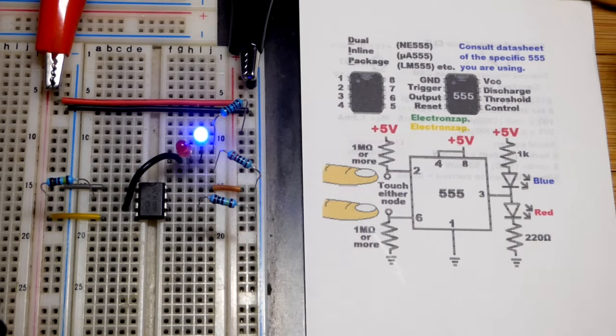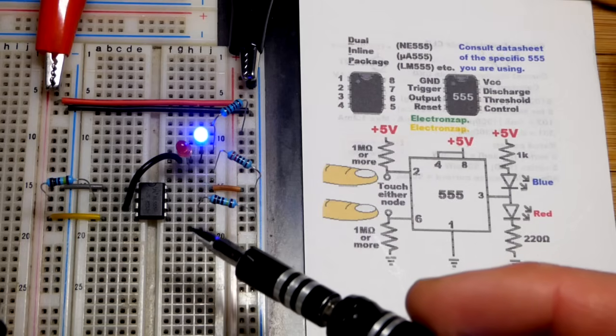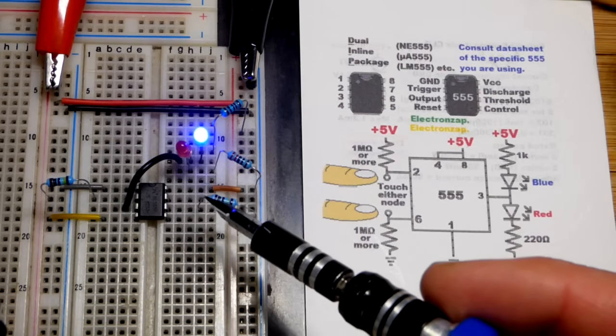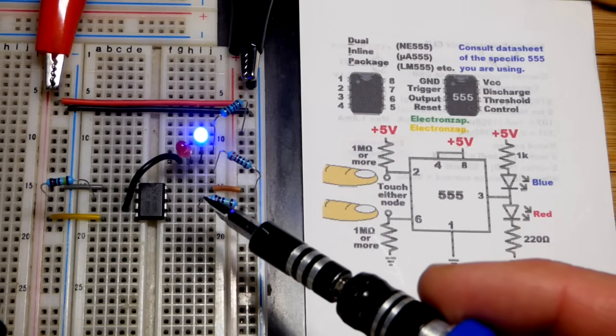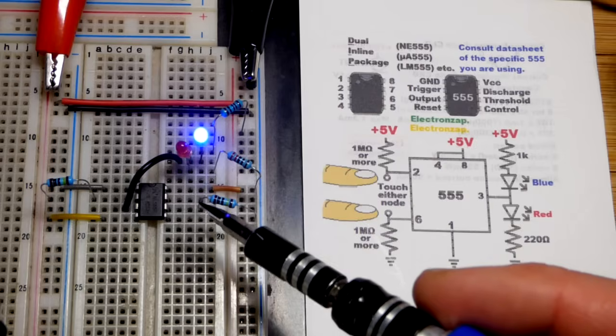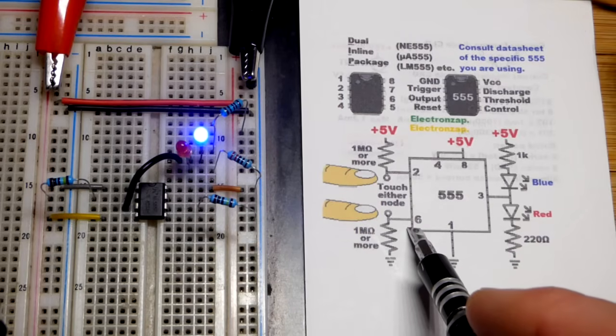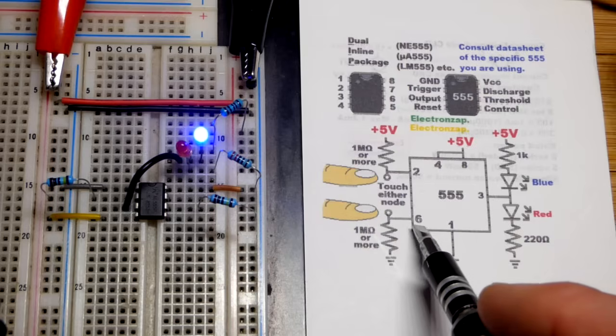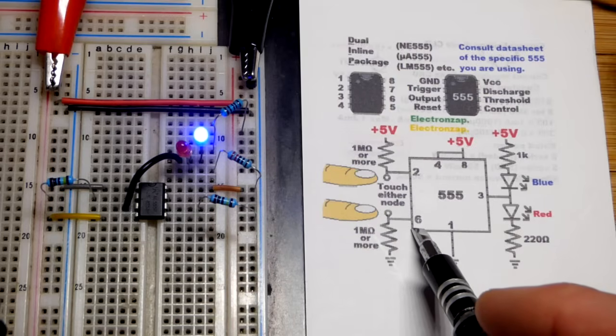Thanks to magnetic fields hitting my body from the alternating current in the house. But in any case, we get above two-thirds supply voltage. For any period of time, the 555 timer is a lot quicker than what the signals are changing in my body.